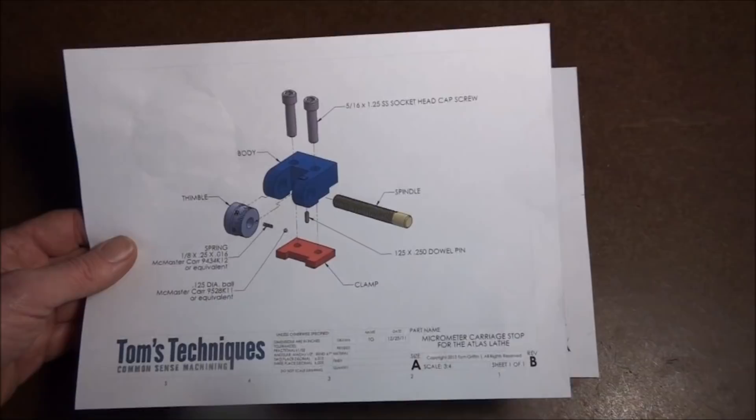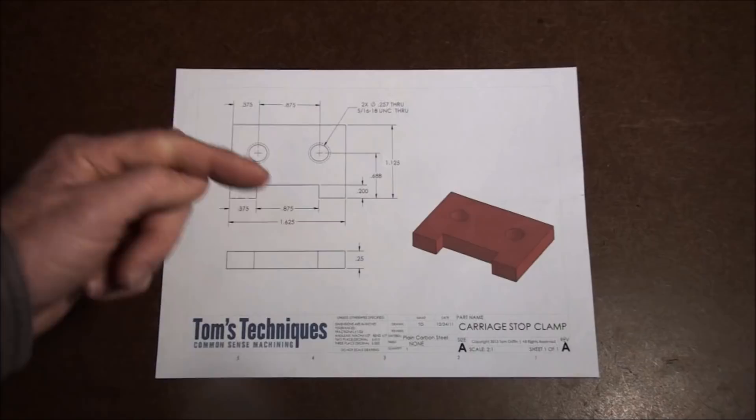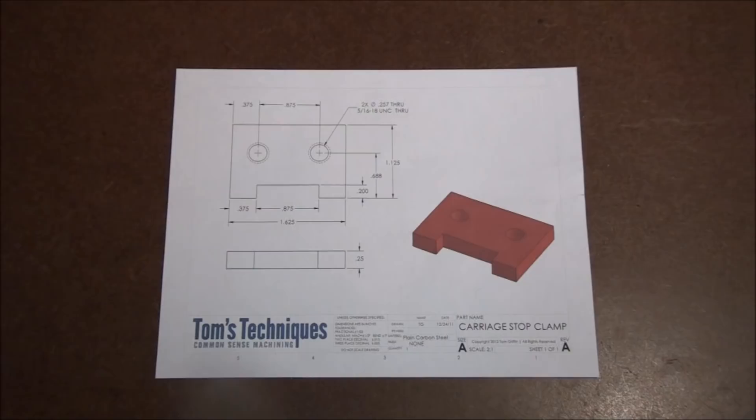It's a pretty simple part, basically just a rectangle of quarter inch steel with a couple 5-16ths 18 tapped holes and then a notch cut out of here to clear the thimble. Eventually when we get around to making the thimble, the clamp has a little notch in it to clear the diameter of the thimble.